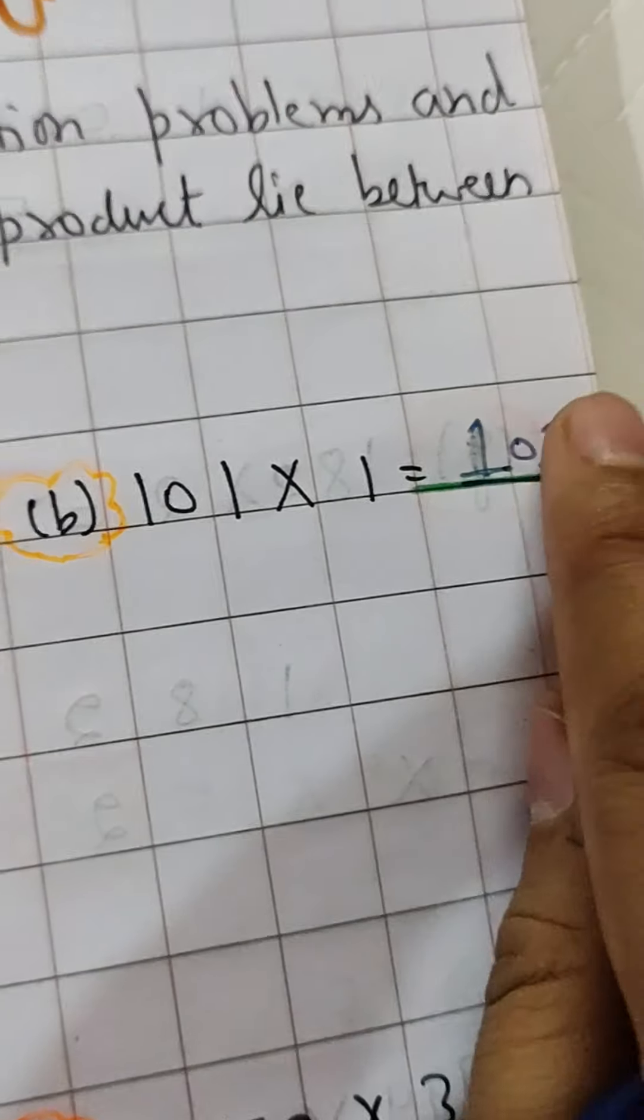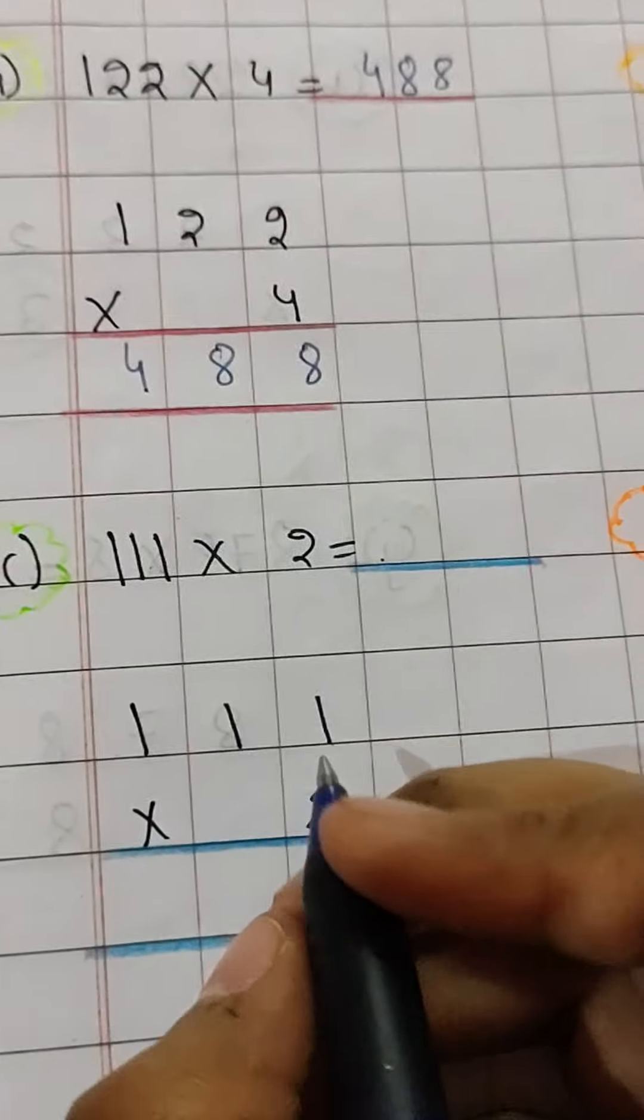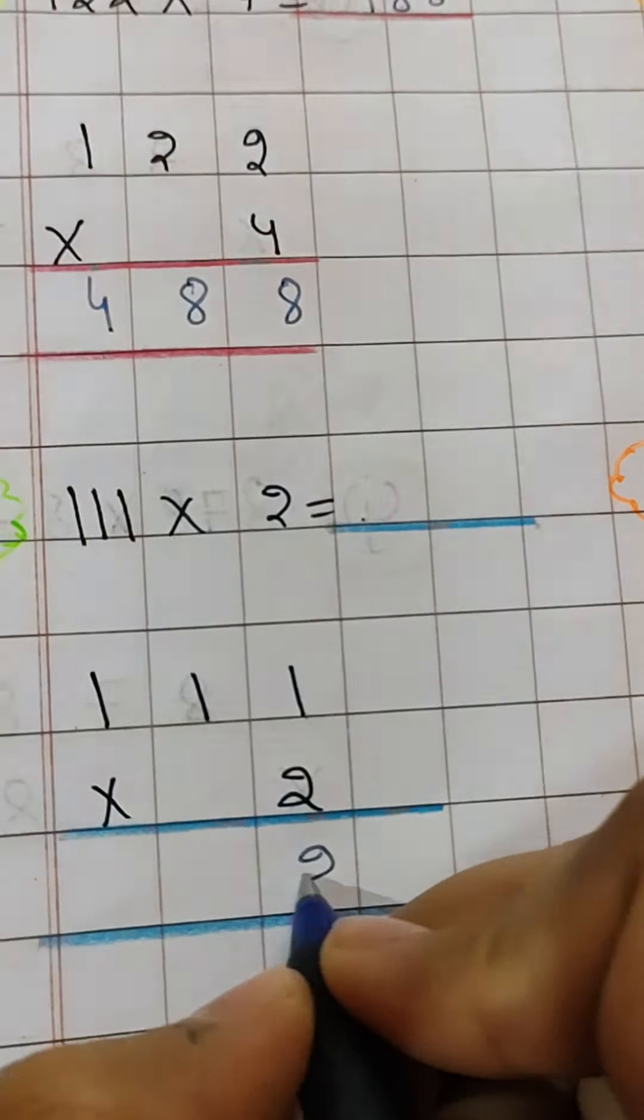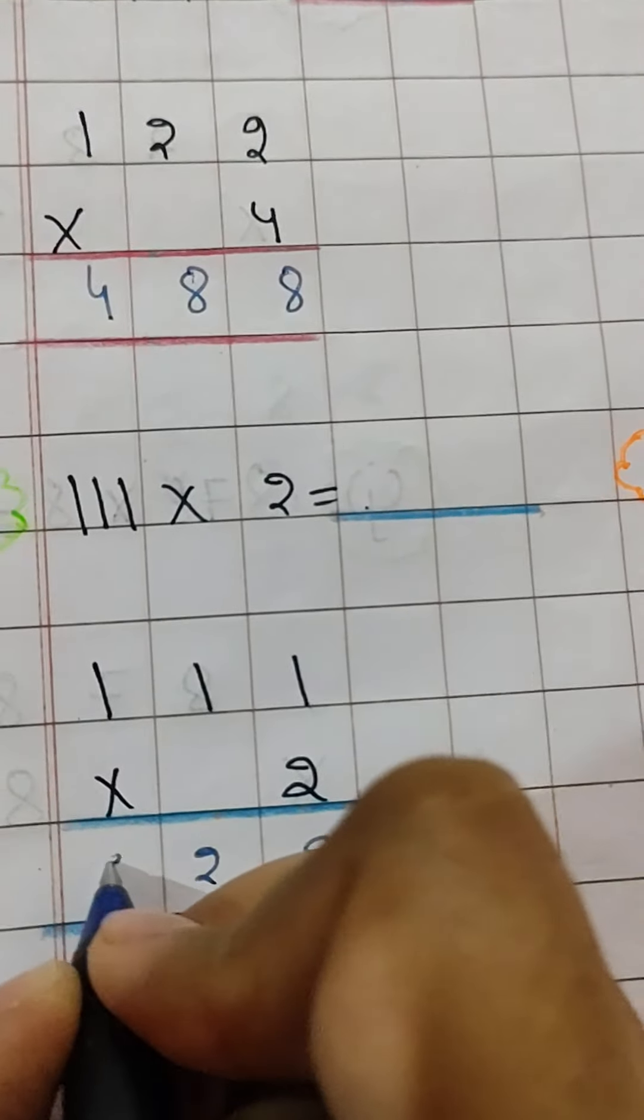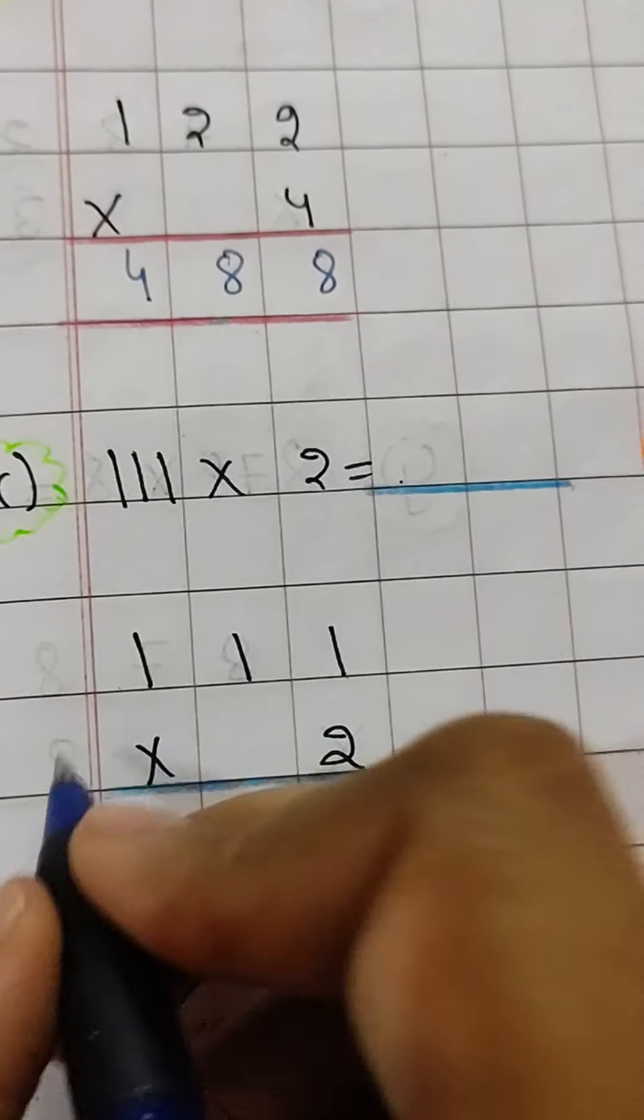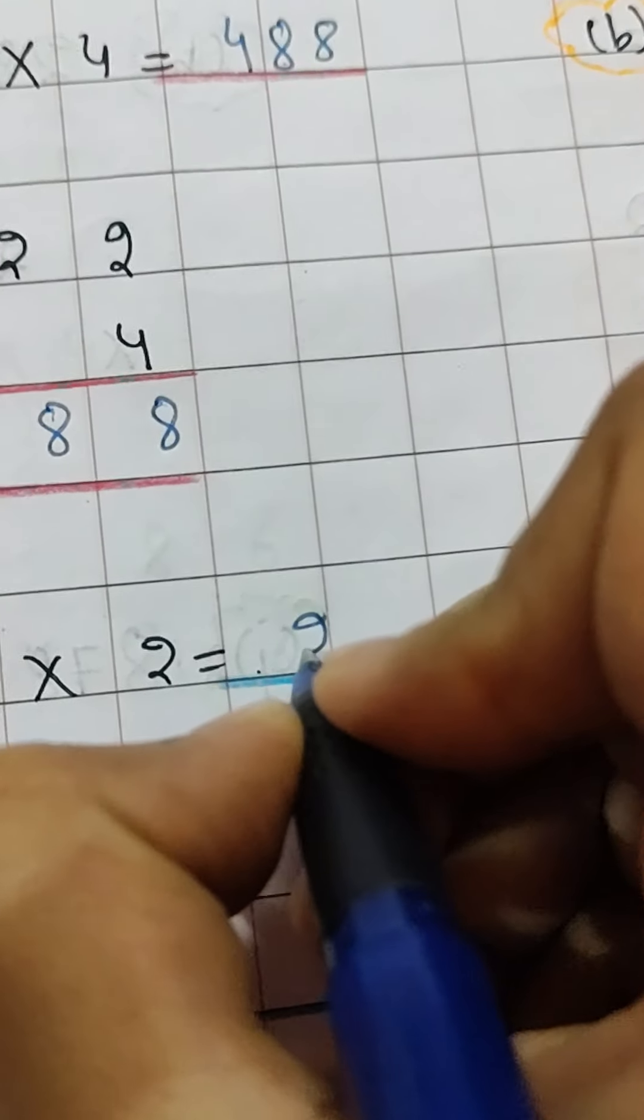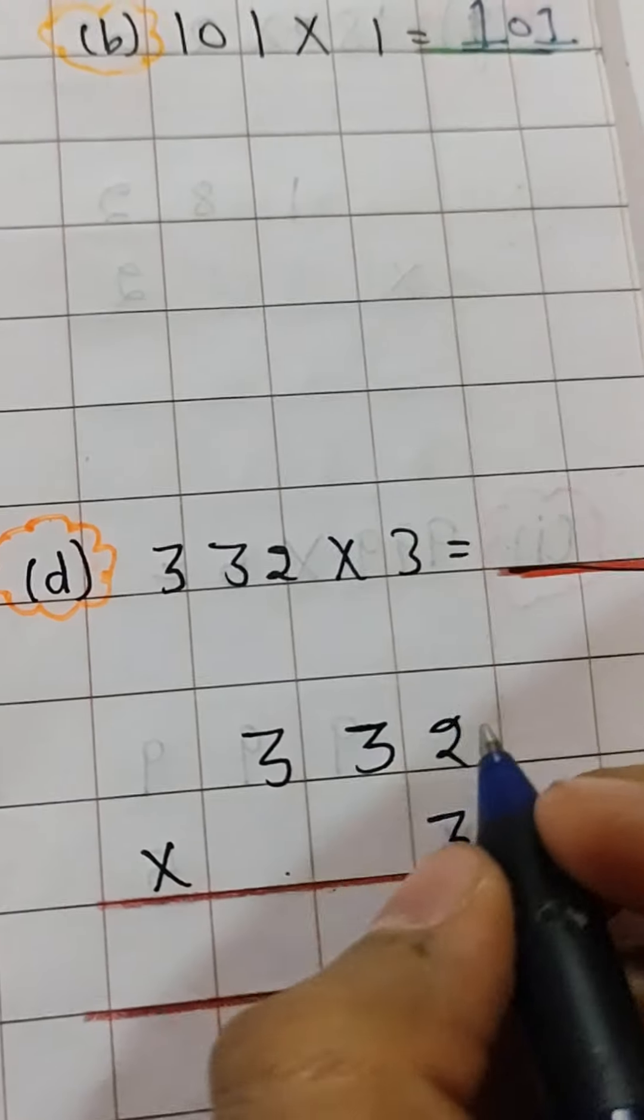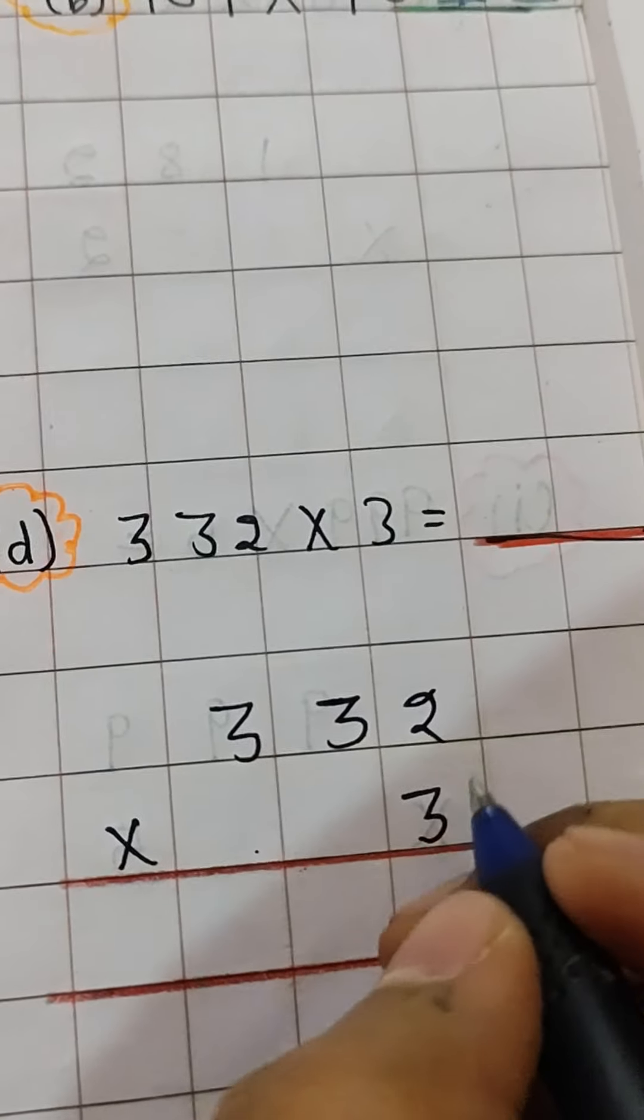Then you multiply this number 111 multiply by 2. So that will be 2 times 1 is 2, 2 times 1 is 2, 2 times 1 is 2. So again your answer is 222.